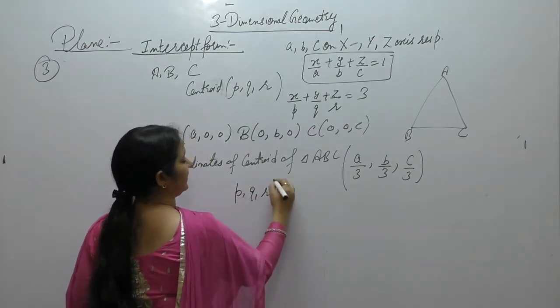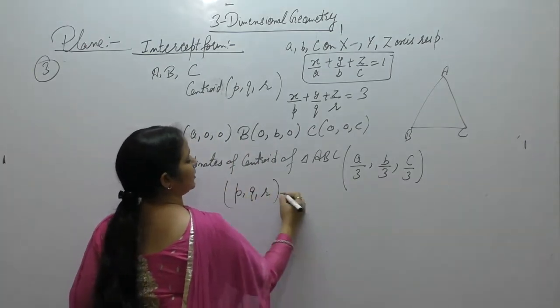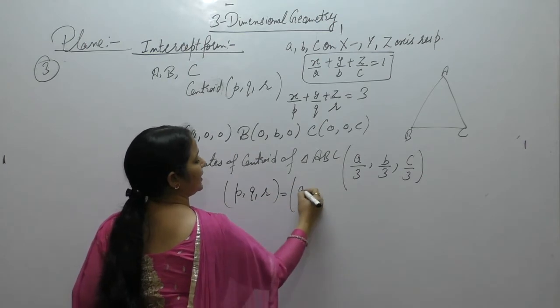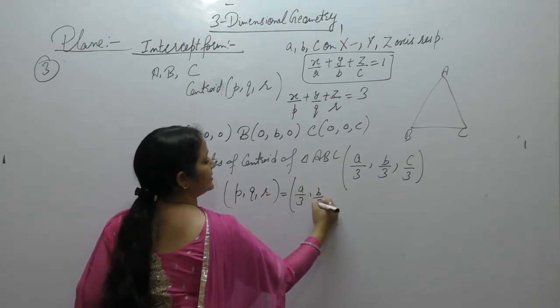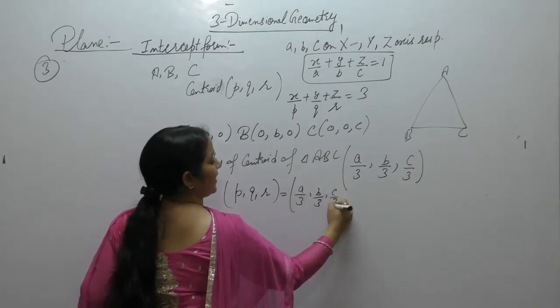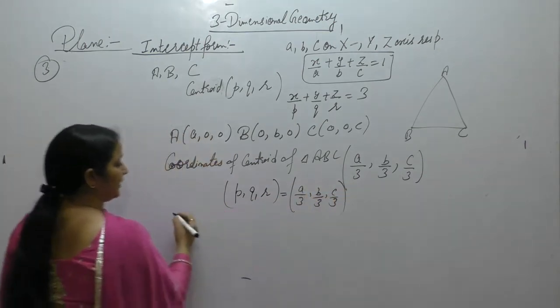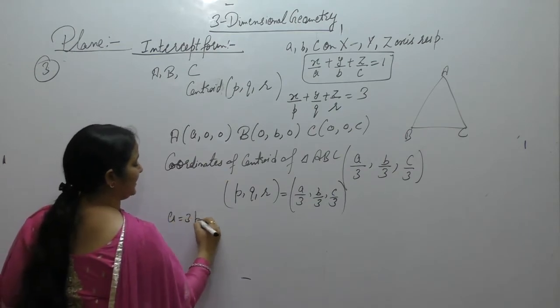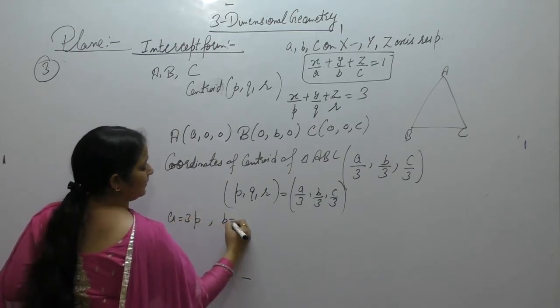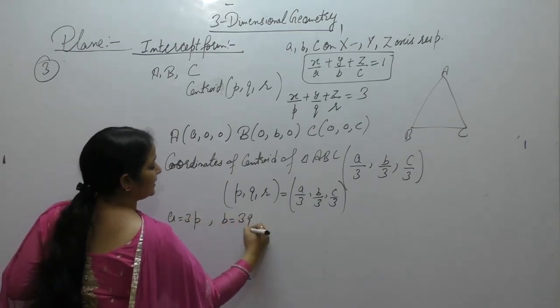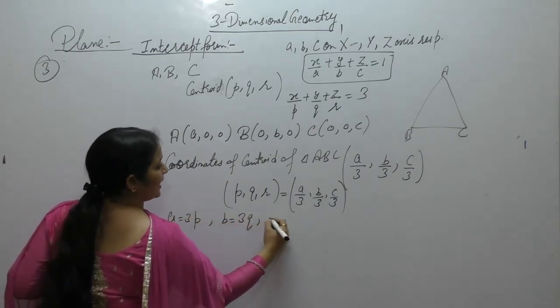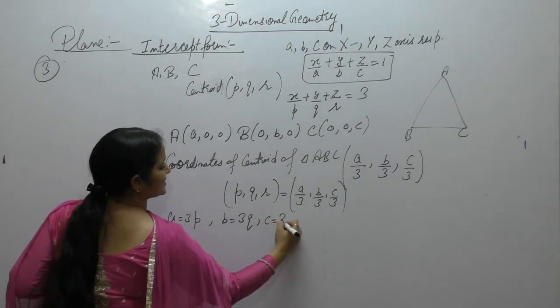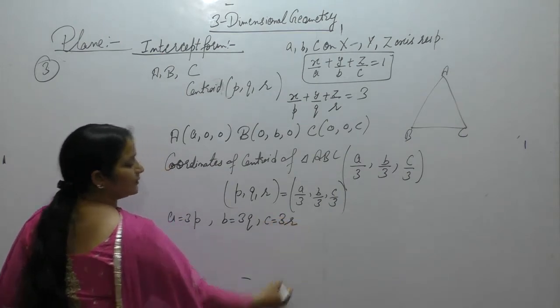By adding all coordinates: x-coordinate is (A+0+0)/3 = A/3, y-coordinate is B/3, z-coordinate is C/3. But we are given that the centroid is (P, Q, R). So we get A = 3P, B = 3Q, and C = 3R.